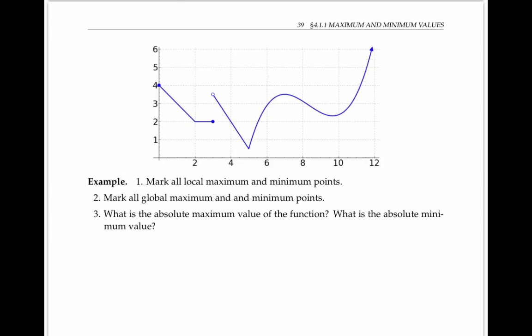Please take a look at this graph and pause the video to mark all local maximum and minimum points, as well as all global (absolute) max and min points, and find the absolute maximum and minimum values. The function definitely has a local min here, since it's the lowest point anywhere nearby in an open interval, and there's a local max point here. There's also a local min point here where the function hits a low point in an open interval, and that local min is also an absolute min. There's also a local min point at the point (3, 2).